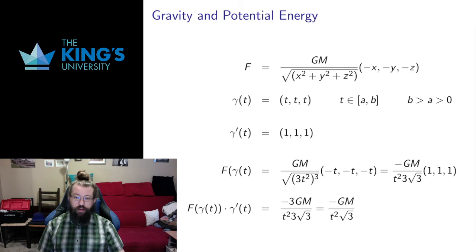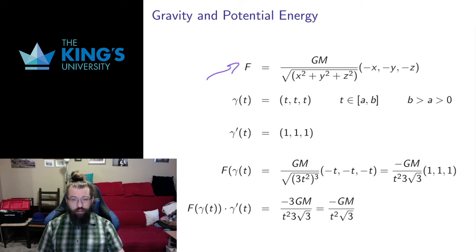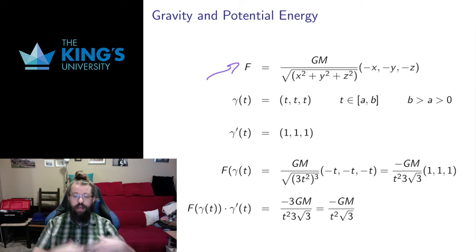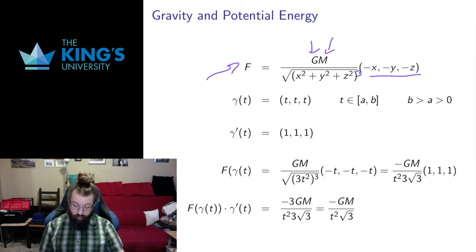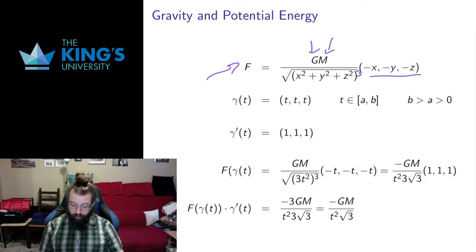Now let me talk about gravity and potential energy. Given that the scalar field giving a conservative vector field is called a potential, the example of forces and potential energy is fundamental. Here's the force of gravity per unit mass — all forces we discuss are per unit mass, so multiply by mass m for a specific object. It has gravitational constant G, some large mass M centered at the origin, and it points back to the origin. The denominator should be cubed to make sense; this is in fact 1/r² — taking the length gives GM/r², where r is the distance from the origin.